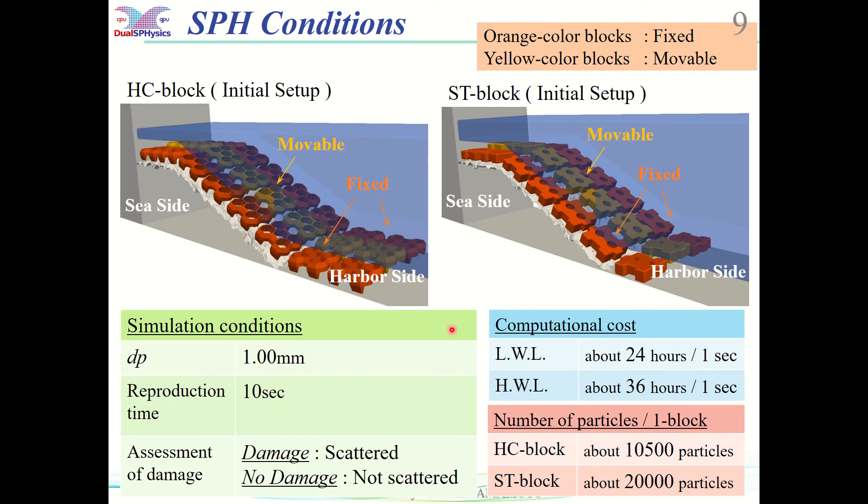This section describes the condition of SPH simulations. The left figure shows the initial setup of the HC block, and the right figure shows the initial setup of the ST block. The blocks are lined up in three rows. The blocks on both sides of the wall, red-colored, are fixed, while only the middle blocks, yellow-colored, are treated as floating objects.